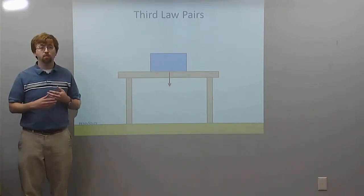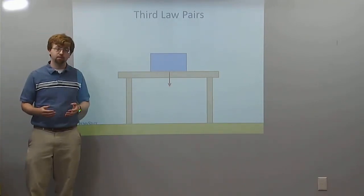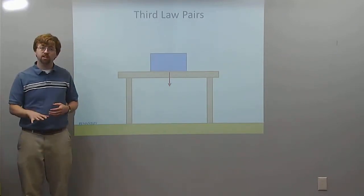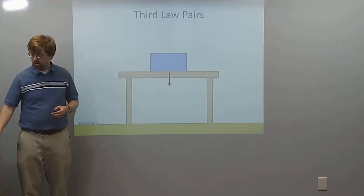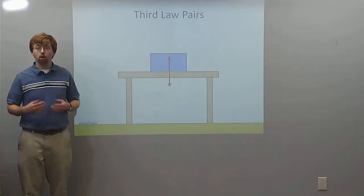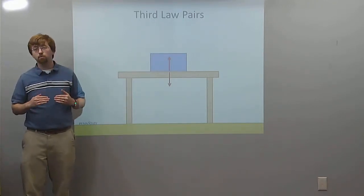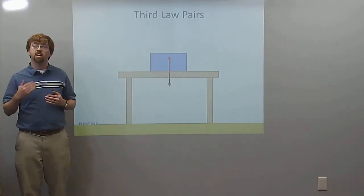The second pair is actually at the point of contact between the box and the table. The box is pushing down on the table with a normal force. We've got an equal and opposite normal force from the table that's pushing up on the box. So that is the second pair.